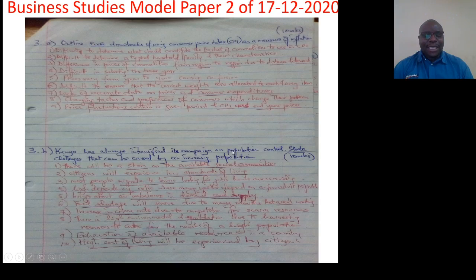Question number three B. Kenya has always intensified its campaign on population control, state challenges that can be caused by an increasing population. Ten marks. There will be a strain on the available social amenities, because more people require more roads, more social halls, more hospitals, more schools, etc. There'll be a strain on the same. So number two, citizens will experience low standards of living because you'll find that they are sharing a lot of resources or amenities and they may not enjoy as much as possible. Remember, standards of living is a factor that has an element of enjoyment.